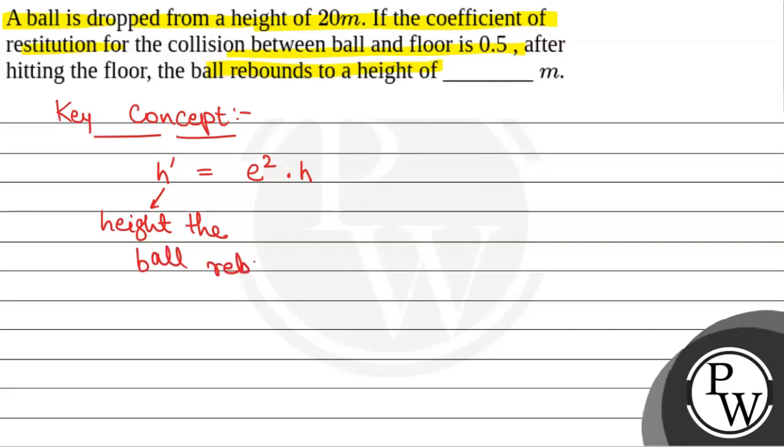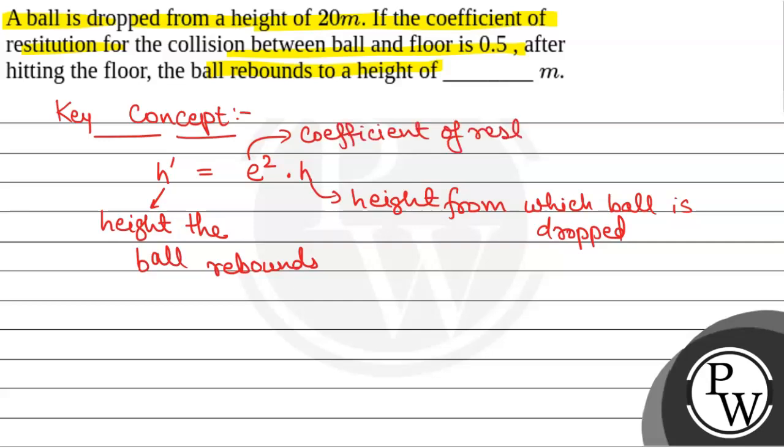H is the height from which the ball is dropped, that is, 20 meter height from which the ball is dropped. And E is coefficient of restitution. E is coefficient of restitution.